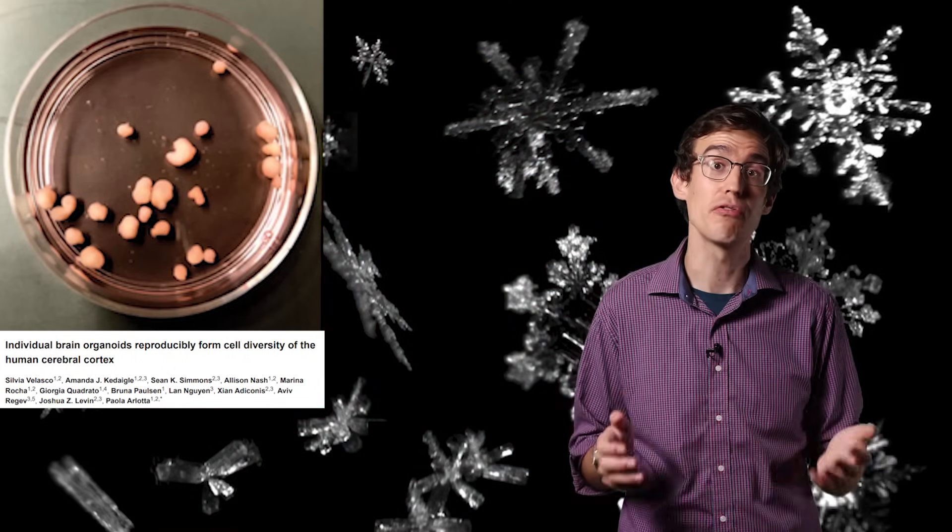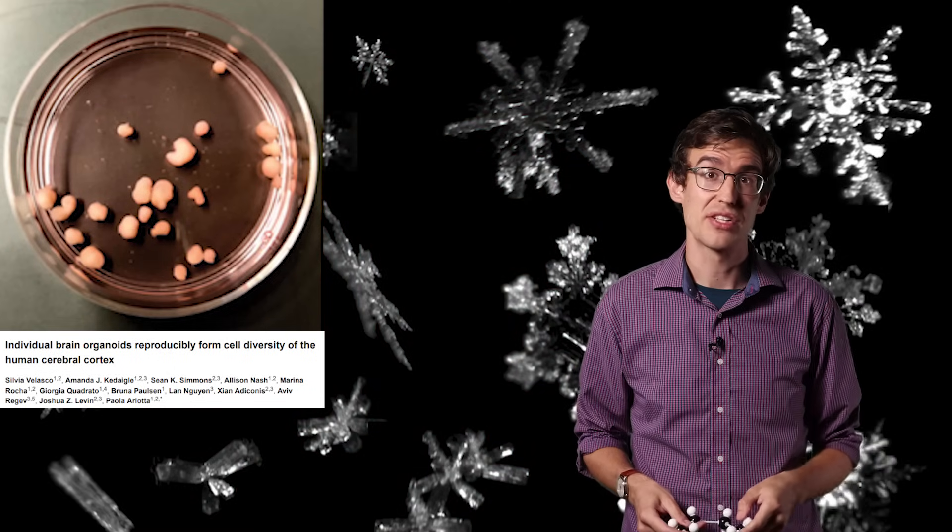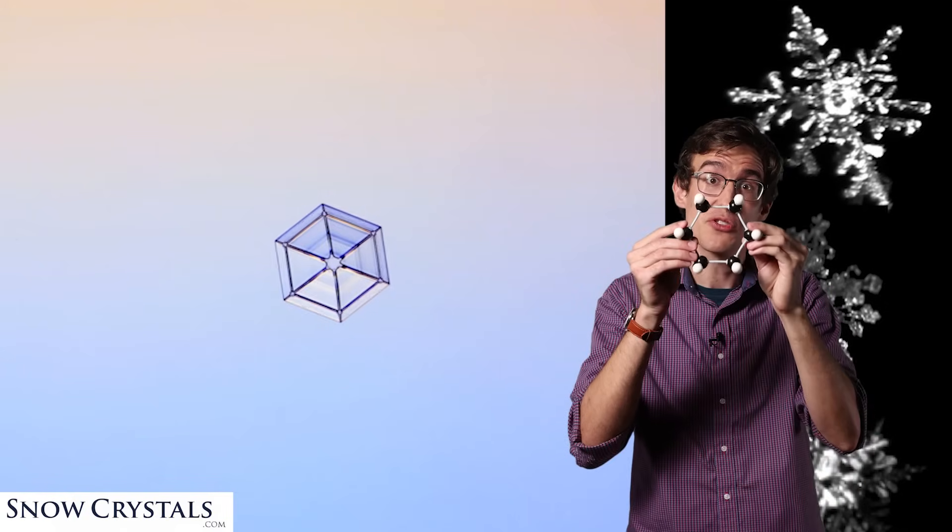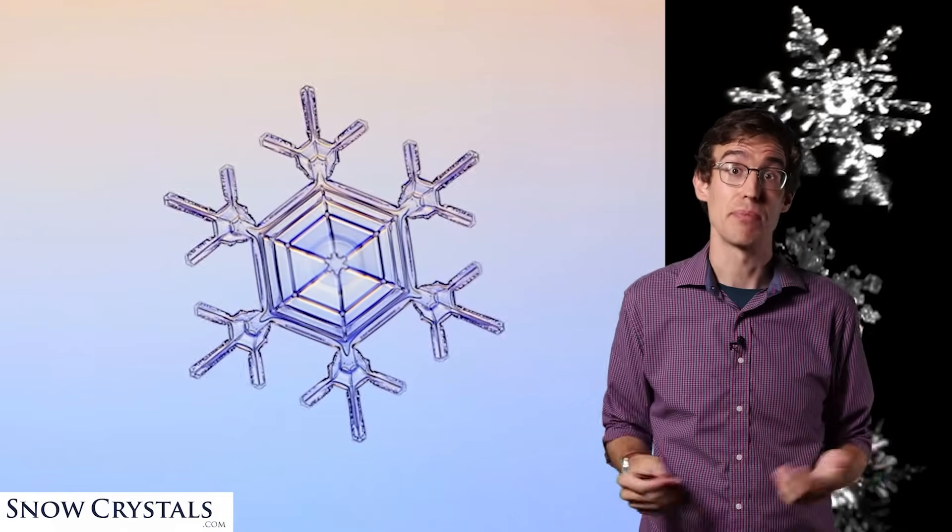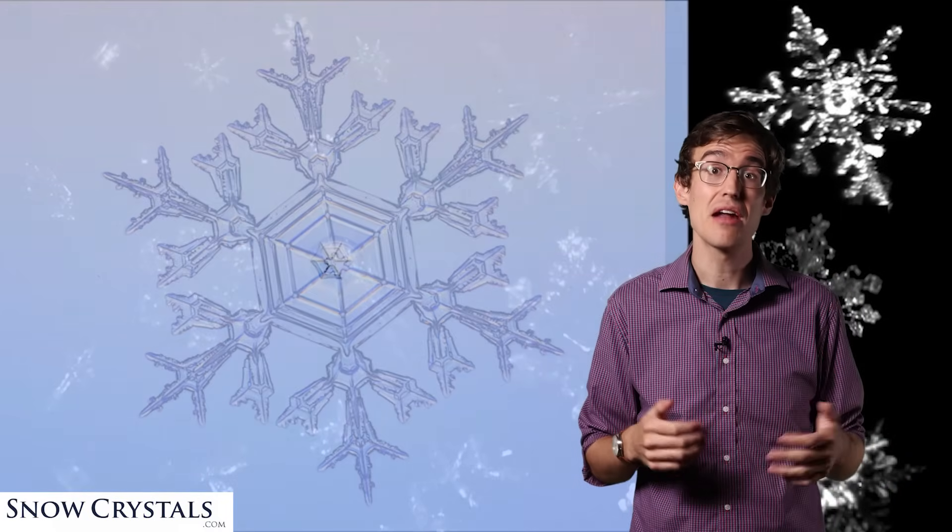It's similar to how snowflakes form. A lot of snowflakes have six sides because they're built on this base of six water molecules in a hexagon, and that shape gets magnified as it picks up more water. But there's a lot of randomness in the process of snowflake formation.